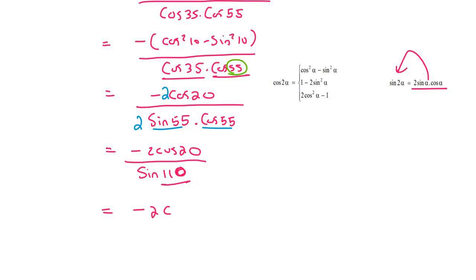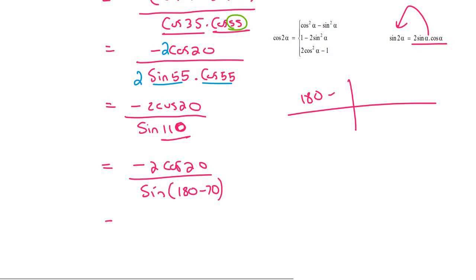And then because it's 110, it needs to be reduced, because it's bigger than 90. As soon as it's bigger than 90, we have to reduce it on the CAST diagram. Now 110 fits into this quadrant. So that's going to be sin of 180 minus 70. And so that's going to be negative 2 cos 20 over sin of 70.